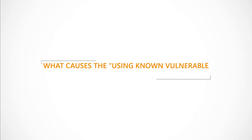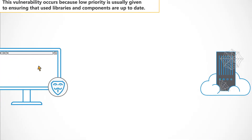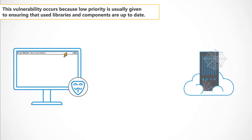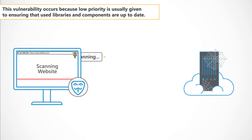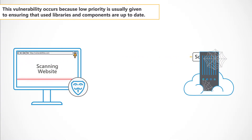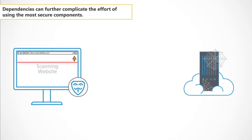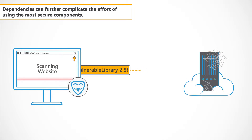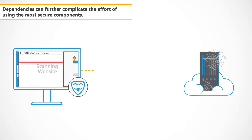What causes the using known vulnerable components vulnerability? This vulnerability occurs because low priority is usually given to ensuring that used libraries and components are up-to-date. Dependencies can further complicate the effort of using the most secure components.